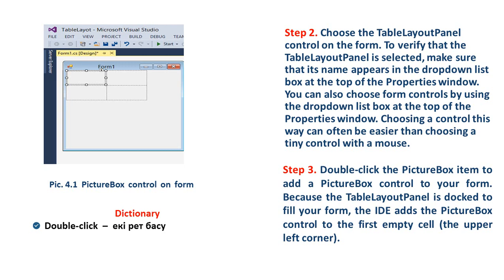Step 3: Double-click the picture box item to add a picture box control to your form. Because the table layout panel is selected to fill your form, the IDE adds the picture box control to the first empty cell, the upper left corner.